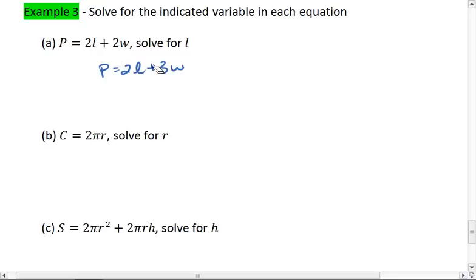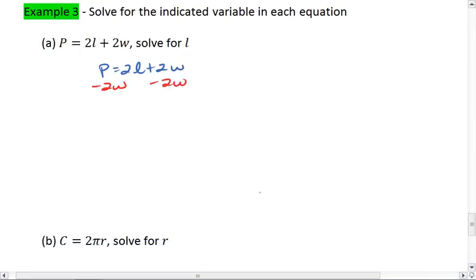So first things first, we want to move the 2W term over. This gives us 2L equals P minus 2W.